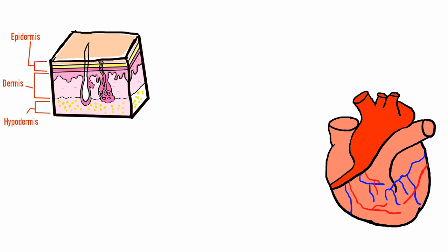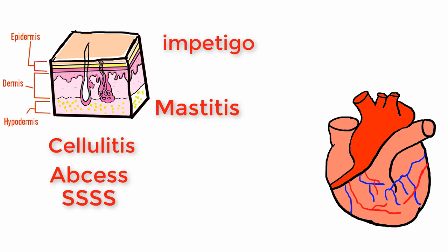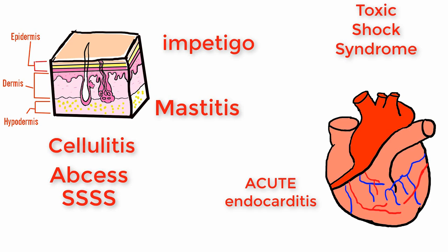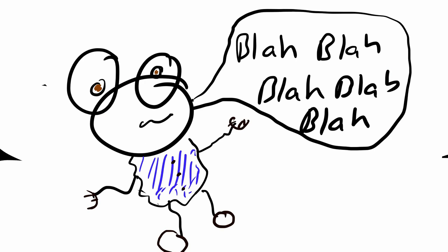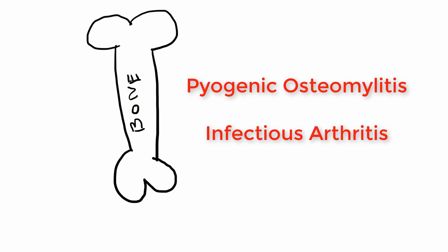So it affects a whole bunch of organ systems and organs, such as the dermis where it can cause cellulitis, abscesses, scalded skin syndrome, impetigo, and mastitis. It can affect the cardiovascular system causing toxic shock syndrome and acute endocarditis. And when I say acute, I mean specifically acute, not subacute endocarditis which is Staph epidermidis. It can affect the GI system with its toxin-mediated foodborne illness, and it affects the prostate causing prostatitis. It also causes atypical pneumonia and affects the bones and joints causing pyogenic osteomyelitis and is the second most common cause of infectious arthritis in older kids and adults.